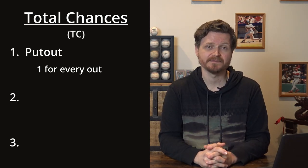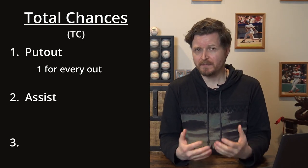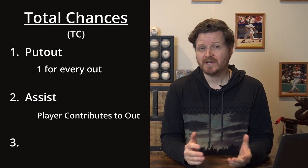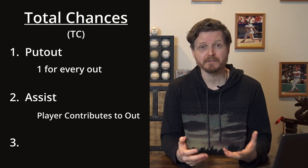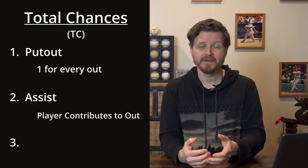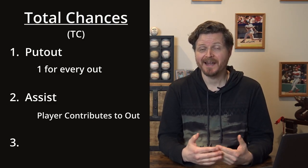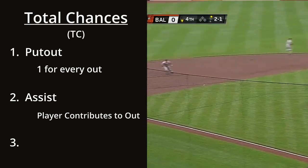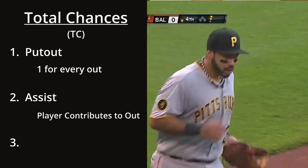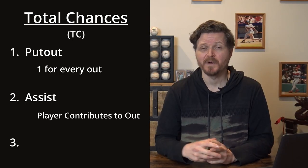The next category is an assist — when a player touches the ball during a play but isn't directly responsible for the out. Most commonly, this is when a player fields a ground ball and throws to first base; the first baseman gets the put out, but the fielder who threw the ball gets an assist. In some cases an assist can even be given to a player who is hit by the ball, as long as that contact was part of the action that resulted in an out.